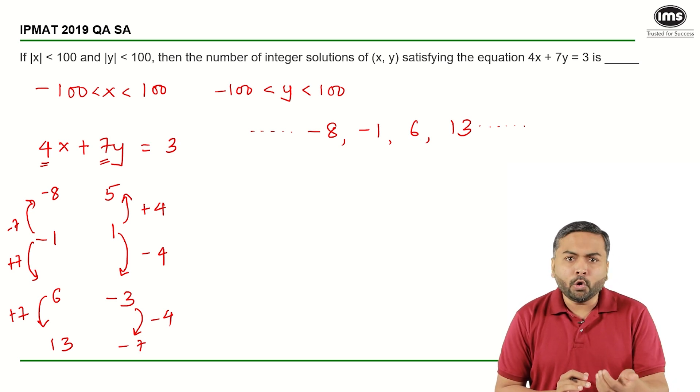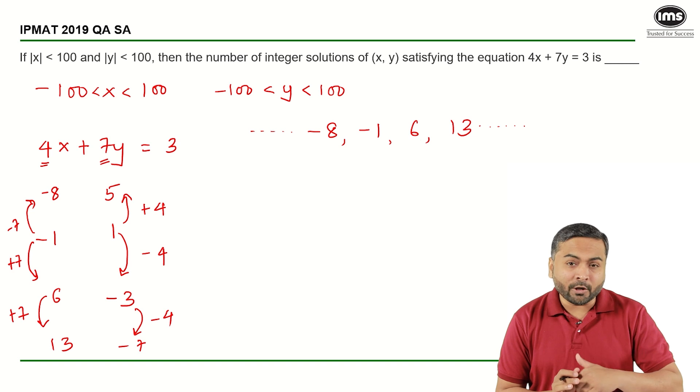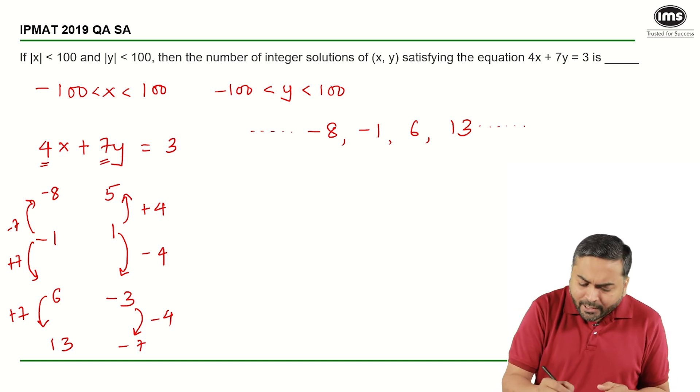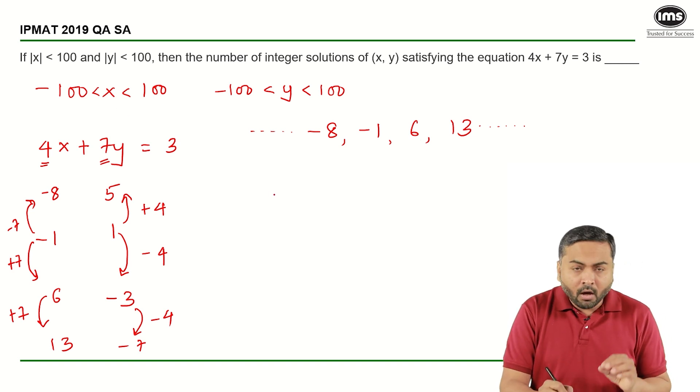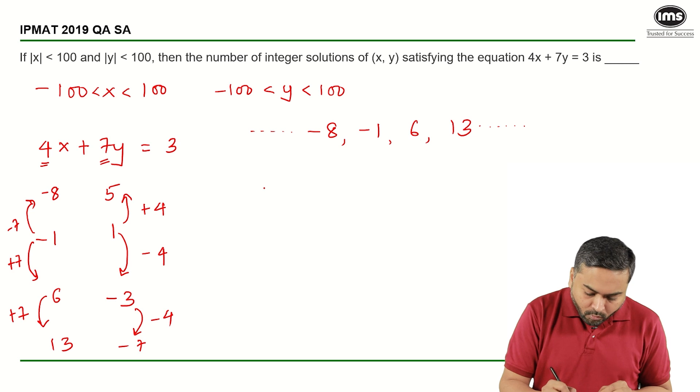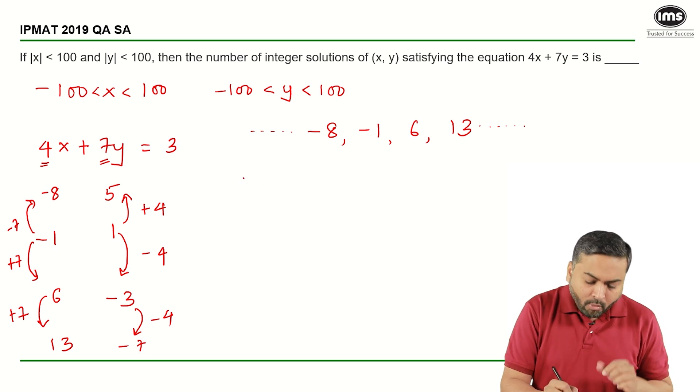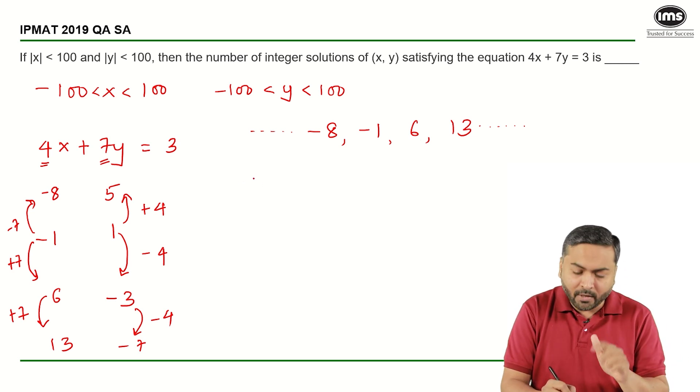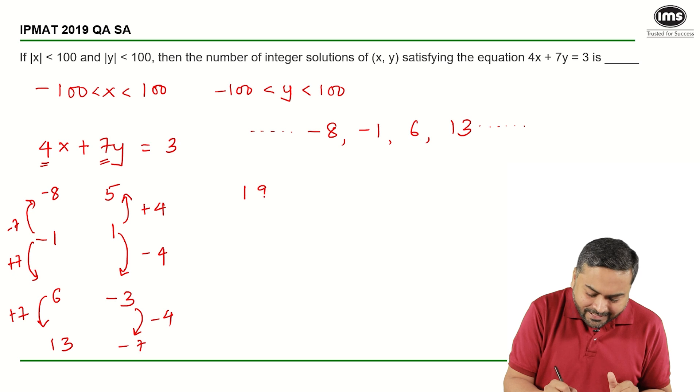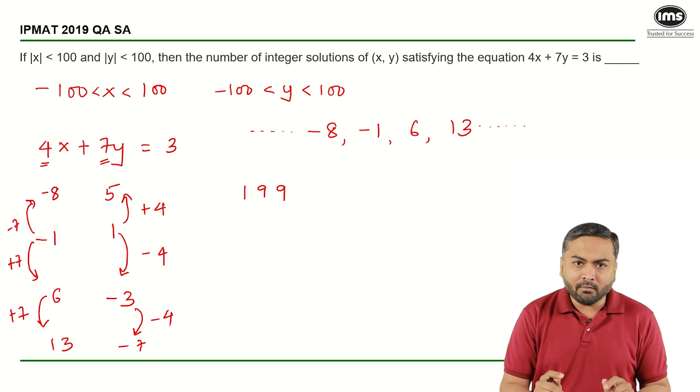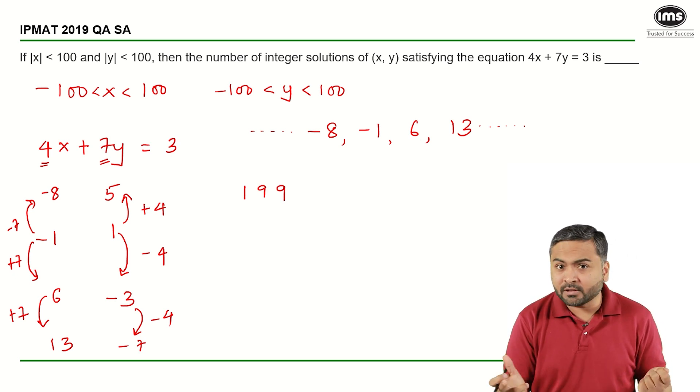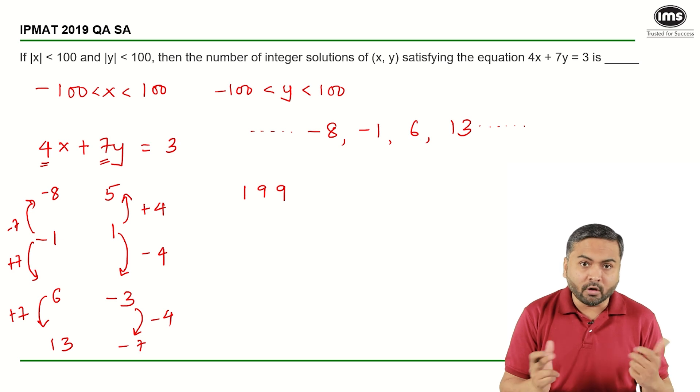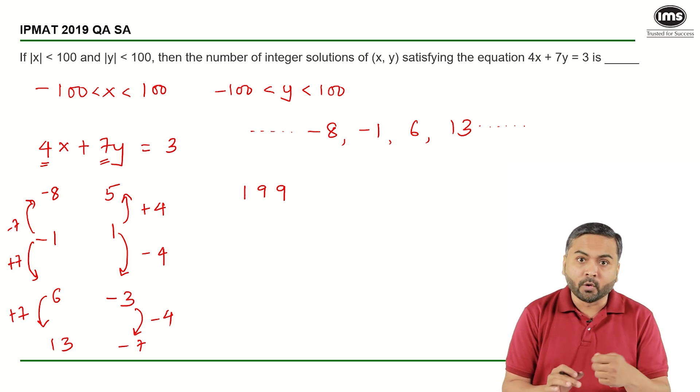However, I would want you to solve this question by not using the concept of arithmetic progression. I know that there are total of from minus 100 to plus 100, there are total of 199 numbers with me, right? Minus 100 and plus 100 is not inclusive. If both of them were inclusive, then we would have total of 201 numbers, right? Including 0.